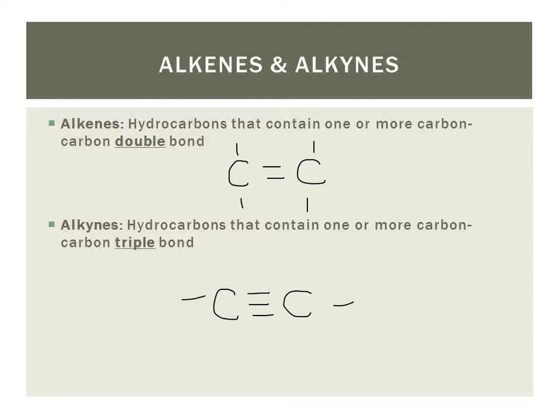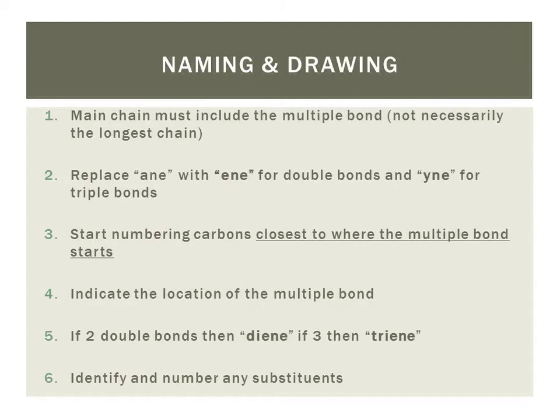This is going to give us the ability to add on atoms that are not already present in the molecule, and we'll see that a little bit later in the reactions. So the first thing you're going to do when you're naming an alkene or an alkyne is to identify the longest continuous chain that contains the double bond or the triple bond. It may not necessarily be the longest continuous chain, but that multiple bond needs to be part of the parent chain.